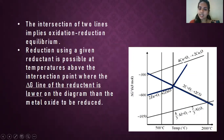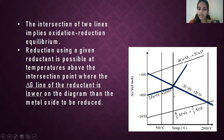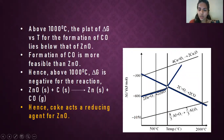Next, coming on to the next example. Whenever there is an intersection of lines in the Ellingham diagram, it indicates oxidation-reduction equilibrium. We can identify whether coke can act as a reducing agent to reduce zinc oxide. These two lines are intersecting. At 1000°C there is an equilibrium between oxidation and reduction. Below 1000°C, the zinc oxide line lies below the carbon monoxide formation line — this line corresponds to carbon monoxide formation and this line corresponds to zinc oxide formation.